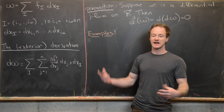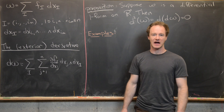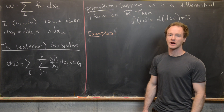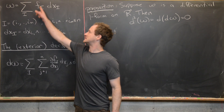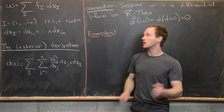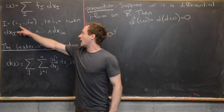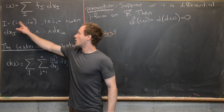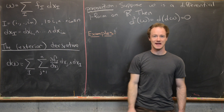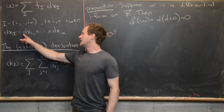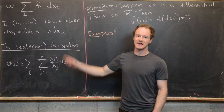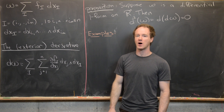We'll give some context in a multivariable calculus setting. Recall that omega is a differential m-form on R^n means it can be written as the sum over multi-indices i of f_i dx_i, where i is a multi-index made up of numbers i1 through im that are strictly increasing and between 1 and n. And dx_i is given as dx_{i1} wedge dx_{i2} all the way up to dx_{im}, known as an elementary m-form on R^n.